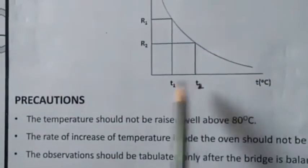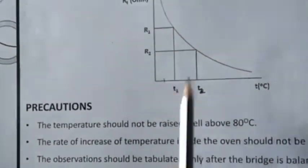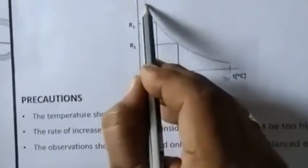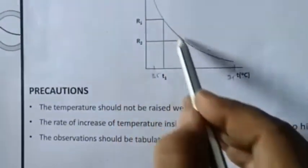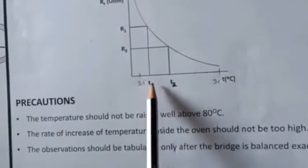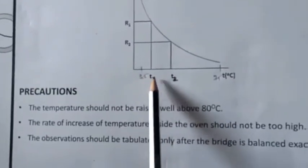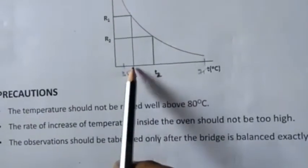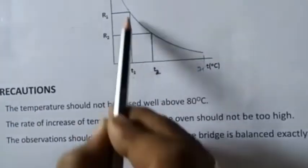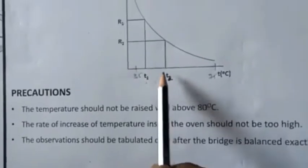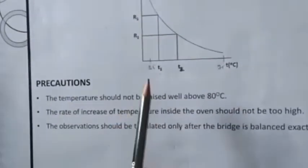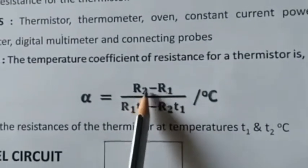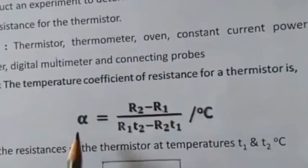Starting from 35 to 75 degrees, record and plot the corresponding resistance values and join all the points using an exponential curve. From this curve, take any two temperatures of your choice — T1 and T2 — and find the corresponding resistance values R1 and R2 from the graph. Substituting R1 and R2 corresponding to temperatures T1 and T2 into the formula, we can calculate alpha.